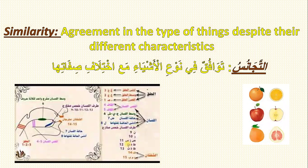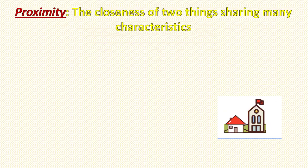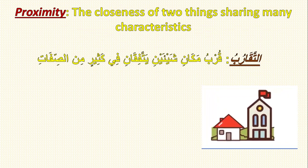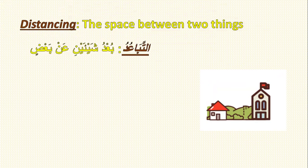Al-Tajanus, or similarity, means agreement in the type of letters despite their different characteristics — like throat letters, tongue letters, or lip letters. The third type, proximity, means the closeness of two things sharing many characteristics.